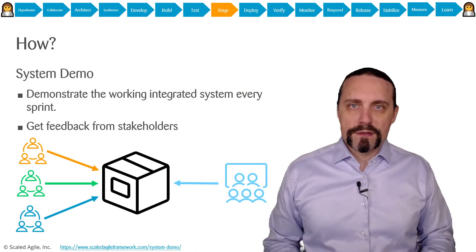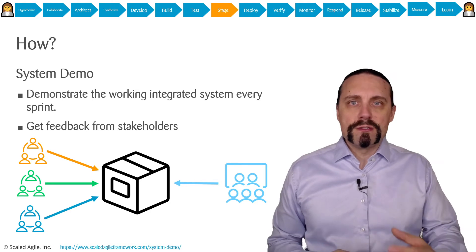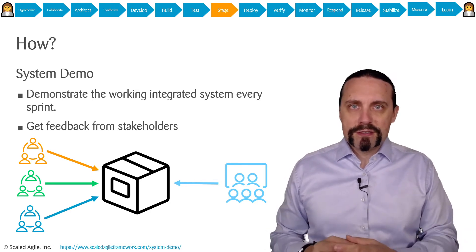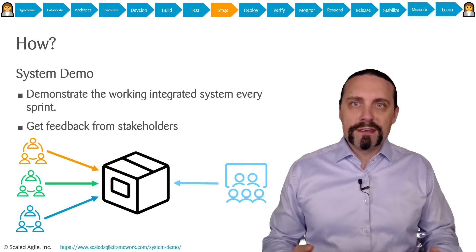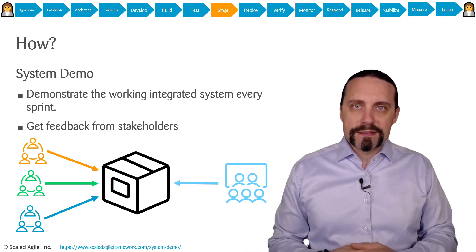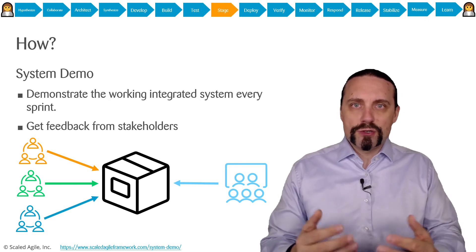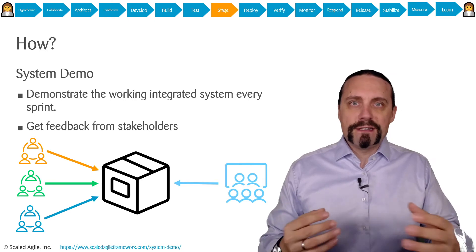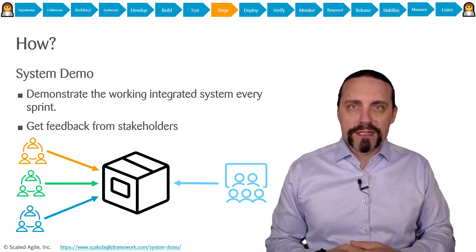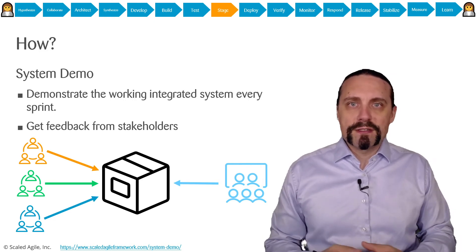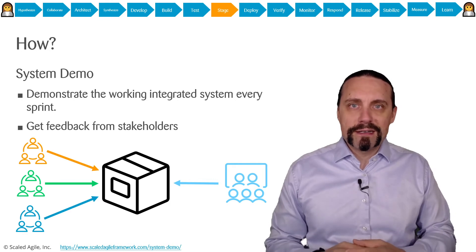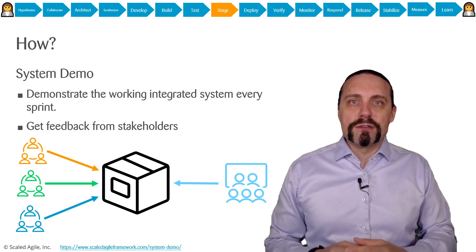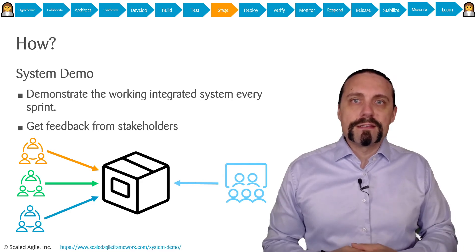We need the stage environment to do the system demo. Because only with the stage environment we can every two weeks integrate with the rest of the software and show to our stakeholders what we have achieved in this two-week sprint and the stakeholders are able to give us feedback and they can also say yes this is good for production or no this needs some rework.